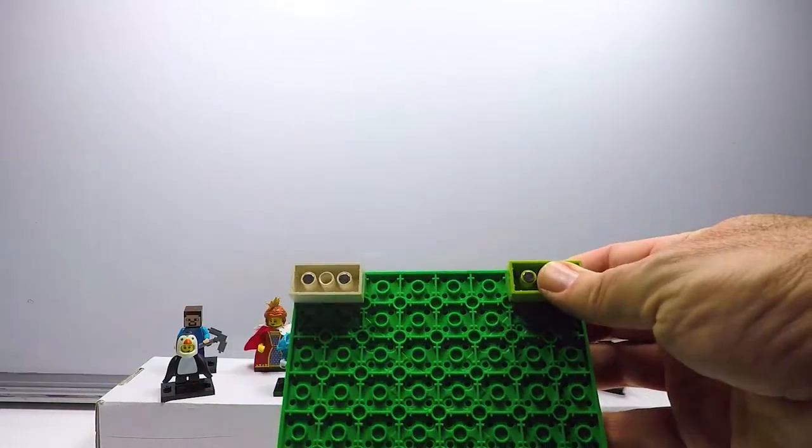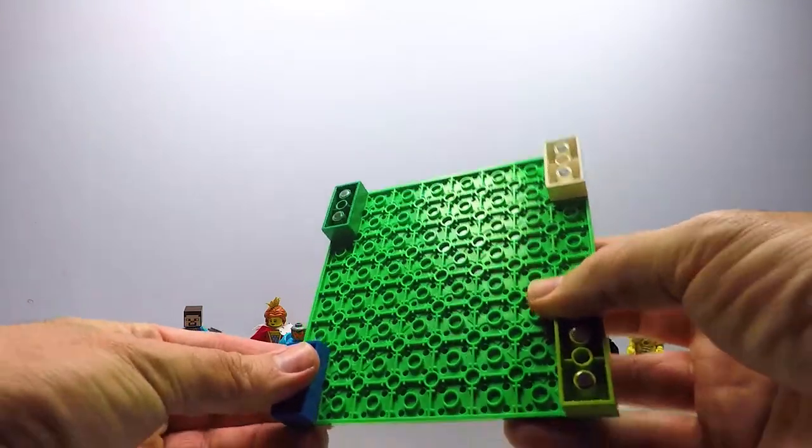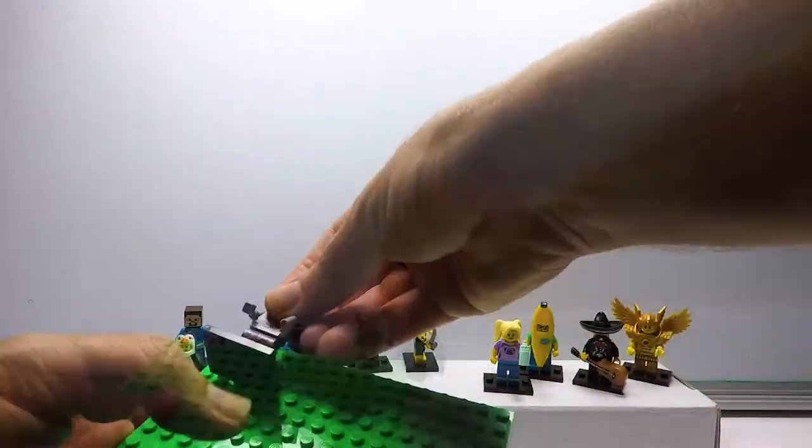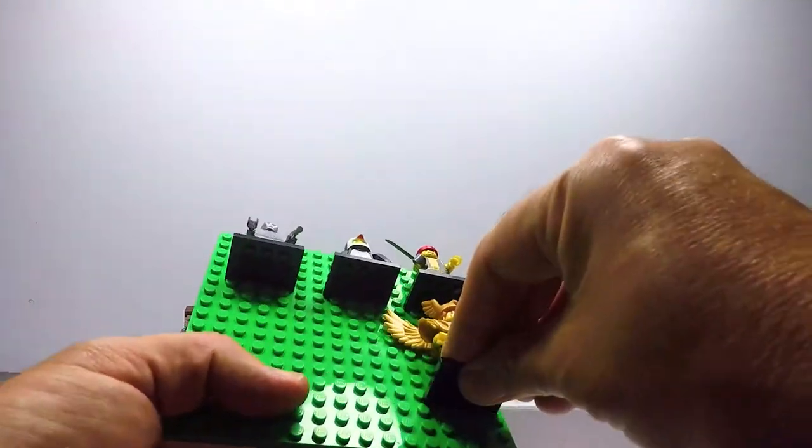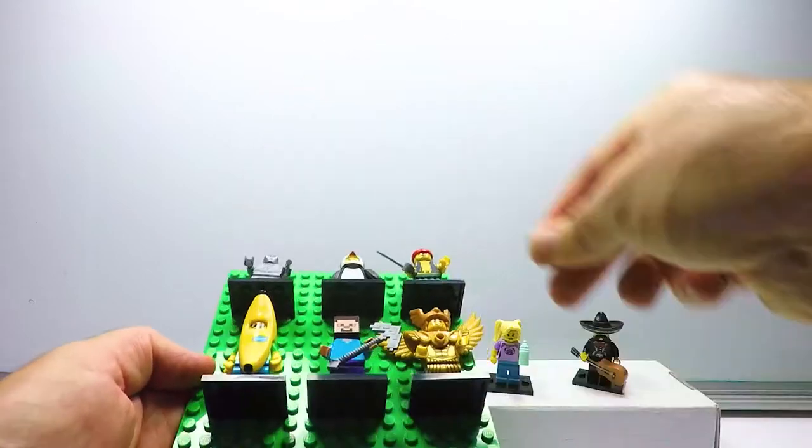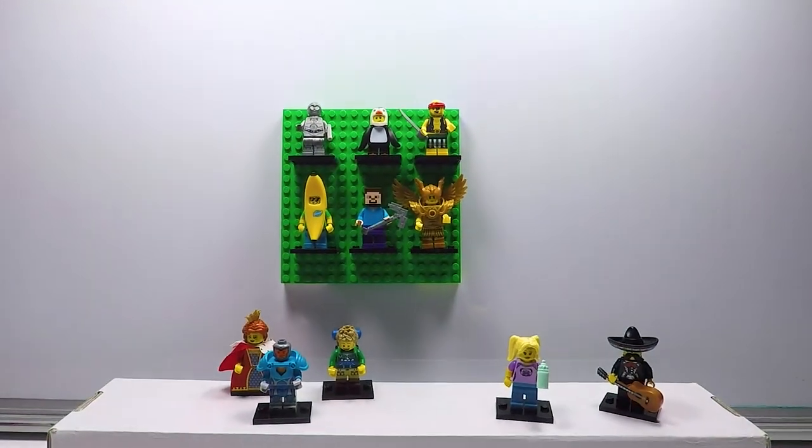I'm just putting on four magnets, then it will just stick to any magnetic board. Then you just put your Lego minifigures on the board and attach it to your fridge or whiteboard. It's another great Lego minifigure display.